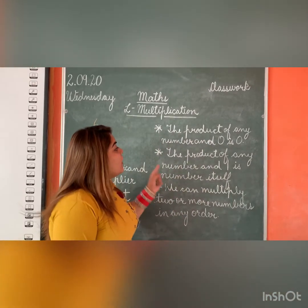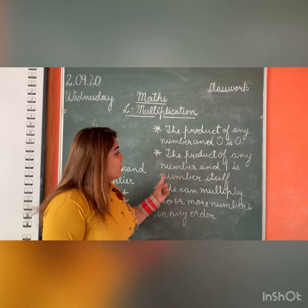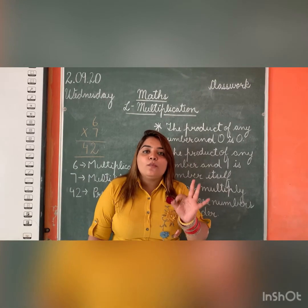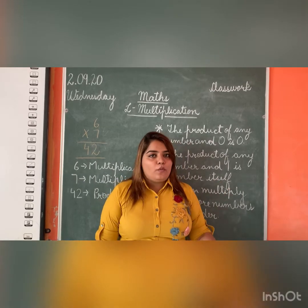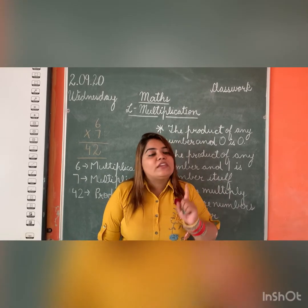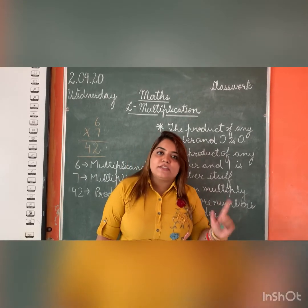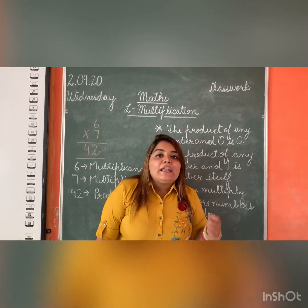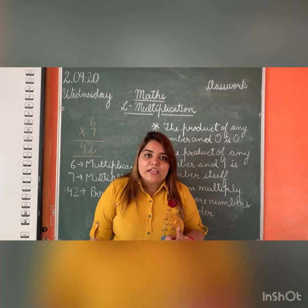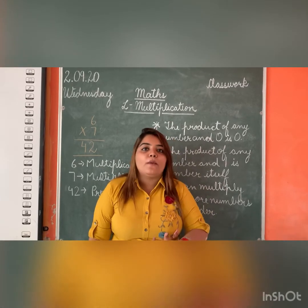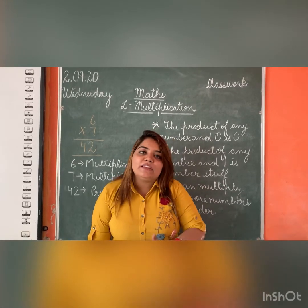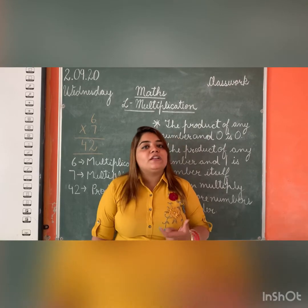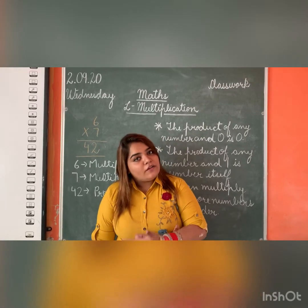Next, the product of any number and 1 is the number itself. Whenever you multiply any number by 1, you get the answer as the number itself. For example, whenever you multiply 8 by 1, you get 8 — the number itself. Similarly, 20 by 1 is 20.